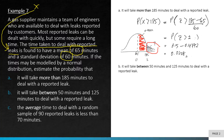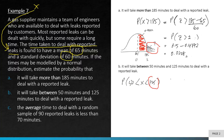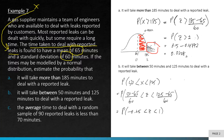For part b, what's the probability it will take between 50 and 125 minutes? Write down the expression, then standardize both values using the formula (x − μ) / σ. This gives z between −0.25 and 1.